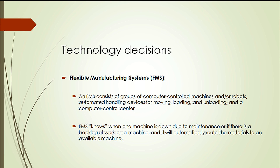A flexible manufacturing system (FMS) is a type of automated system that combines the flexibility of intermittent operations with the efficiency of continuous operations. Machines in an FMS consist of a group of computer-controlled machines and/or robots, automated handling devices for moving, loading, and unloading, and a computer control center. The FMS knows when a machine is down for maintenance or if there is a backlog of work, and will automatically route materials to an available machine.